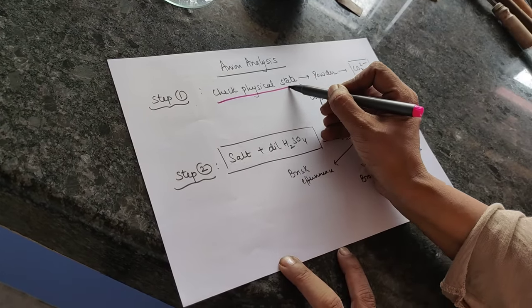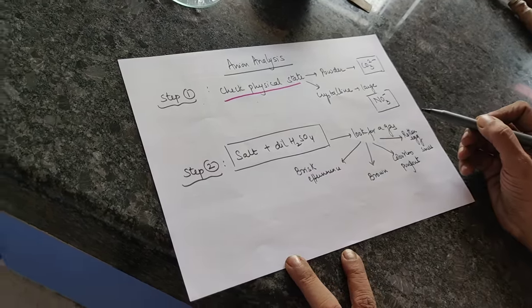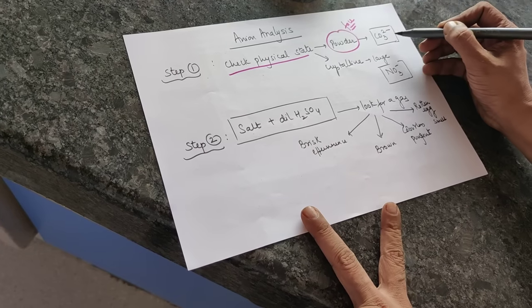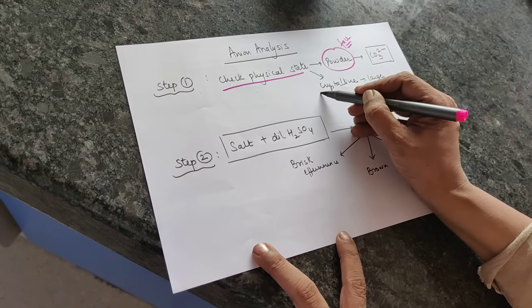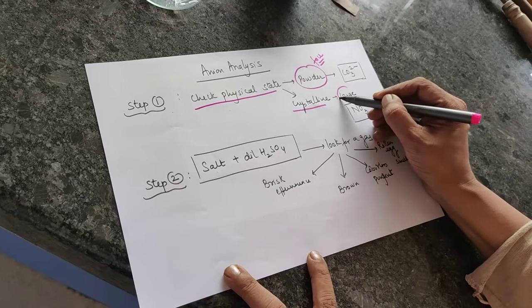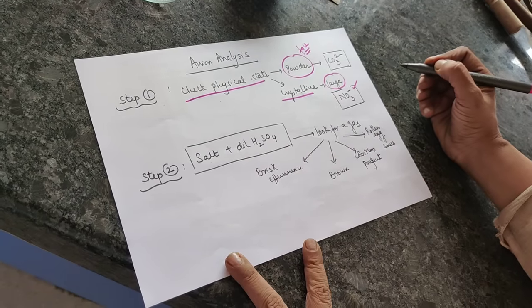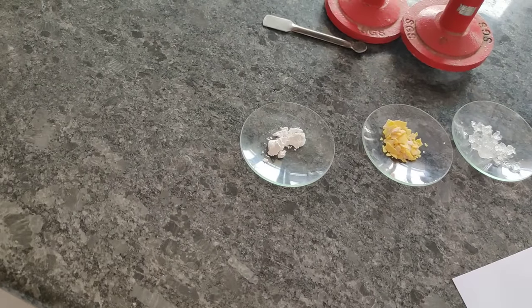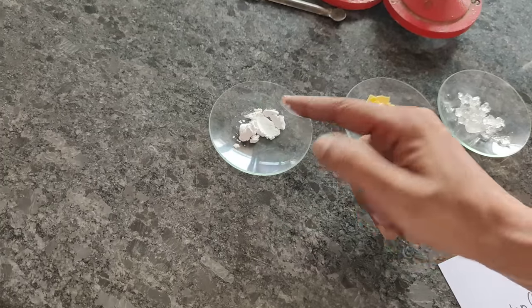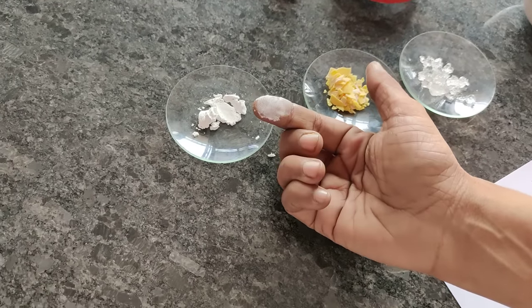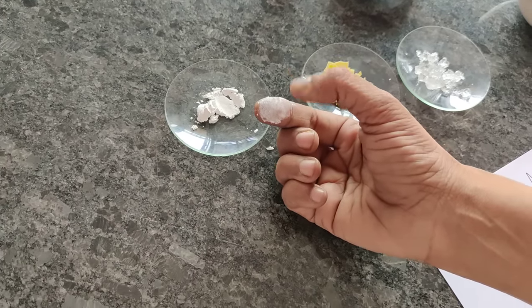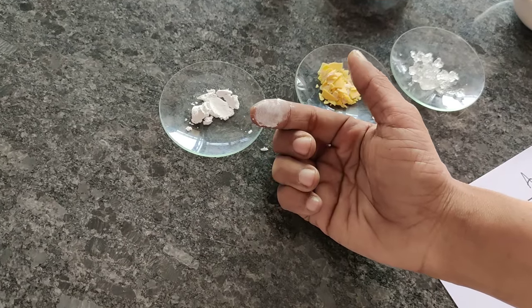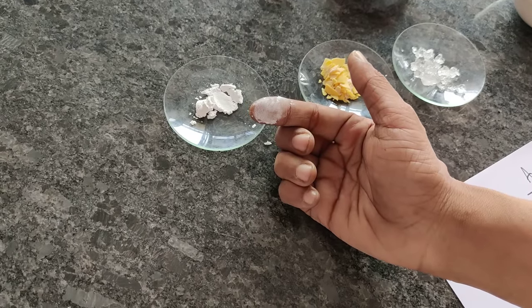Step one of the anion analysis is that you need to check the physical state. If the salt looks like face powder, you would say it is a carbonate salt. If it's crystalline with large crystals, the probability is it's a nitrate salt. Now I have a few salts here which you can see. This salt looks like face powder - it has gone into the lines of my finger.